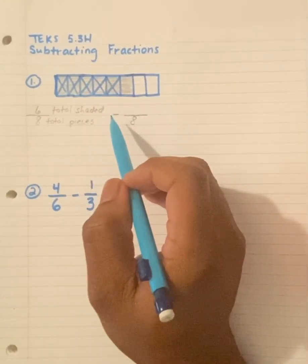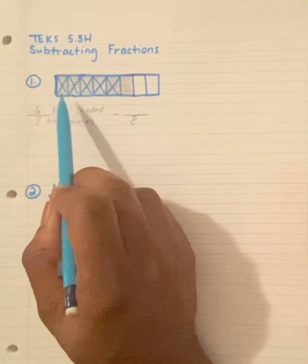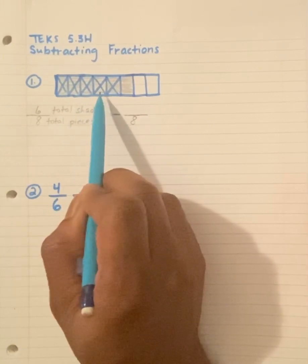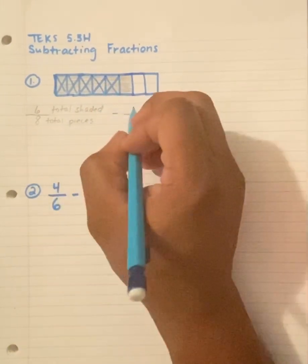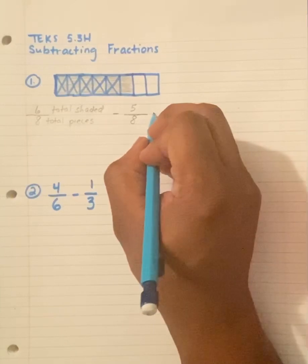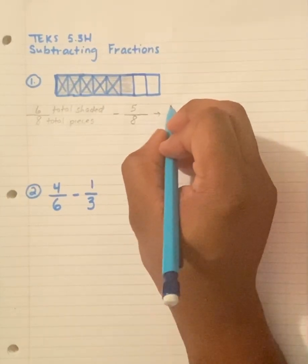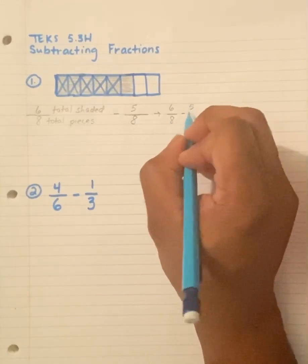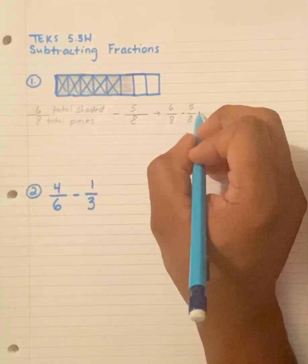How many pieces have an X through it? 1, 2, 3, 4, 5. So in reality, my number sentence is 6 over 8 minus 5 over 8 or 5 eighths.